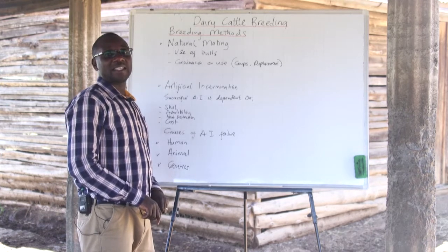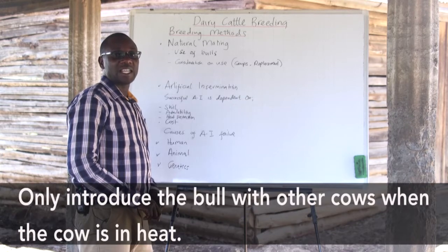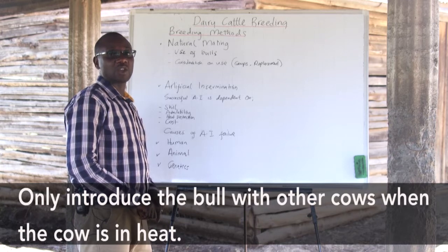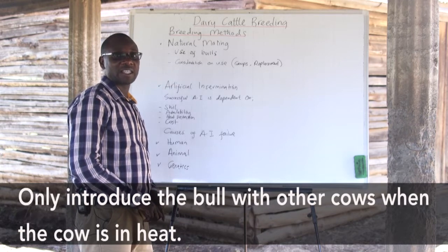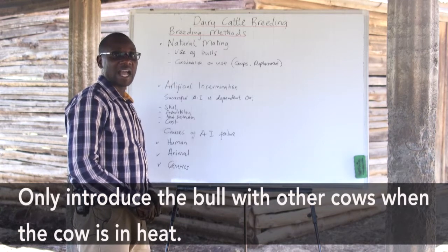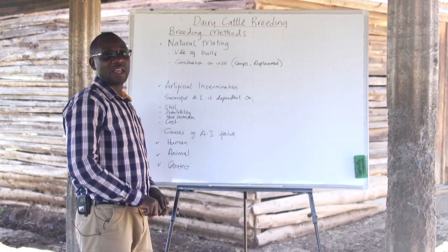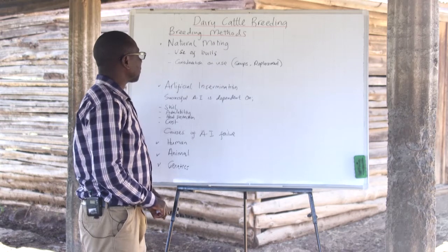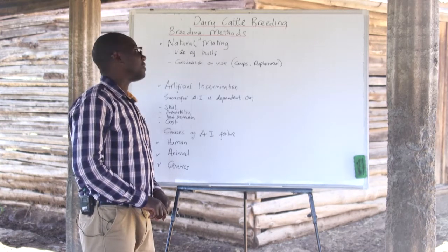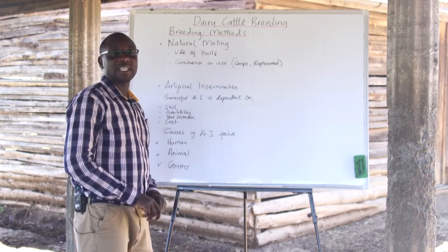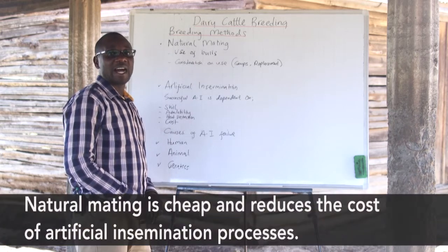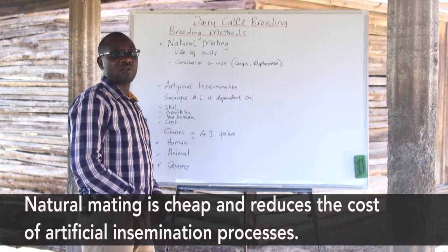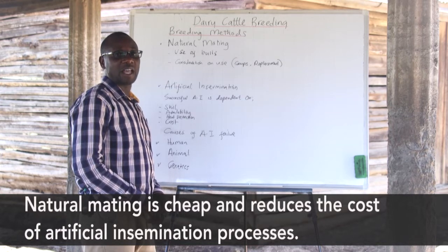The bull will not be kept together with the other cows. The bull needs to be kept securely in a separate paddock and separate housing until the right time to be introduced to the cow. One of the advantages of using natural mating is that it is cheap and reduces the costs of serving the animals.